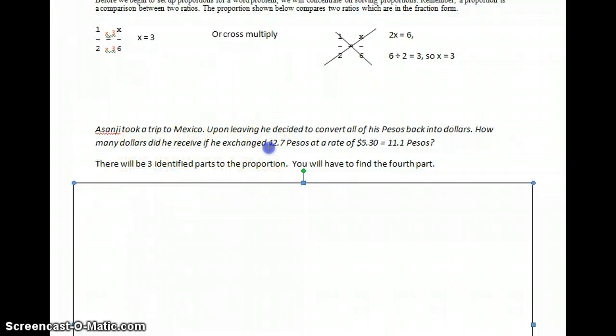one of the parts is 42.7 pesos. I'm going to just underline it. Another part that is already identified is $5.30. And the third part that is identified is 11.1 pesos. So you see, I've got three things identified.